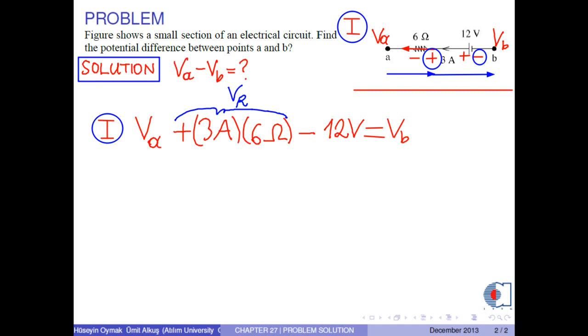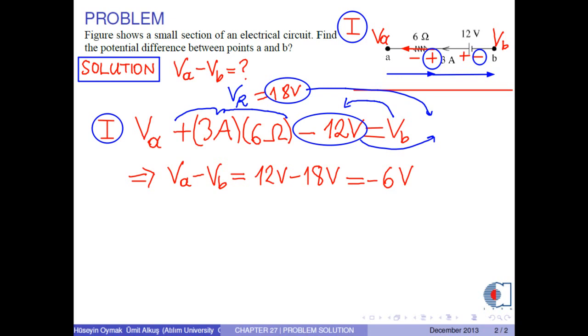If we take Vb to the left hand side, we obtain Va minus Vb. Also, negative 12 and 18 can be taken to the right hand side. As a result, we obtain the potential difference between points A and B as negative 6 volts.